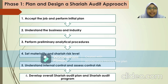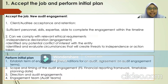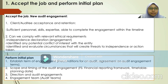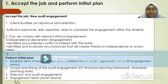In the first phase — planning and designing a Sharia audit approach — there are six processes. The first process is to accept the job and perform the initial plan. For new audit engagements, the Sharia auditor must follow several procedures, including client acceptance and retention: ensuring they have sufficient personnel, skills, and expertise to complete the engagement within the timeline. They must also comply with relevant ethical requirements such as the independent declaration, identify any potential conflict of interest with the entity, and identify and evaluate any circumstances that would create a threat to independence.